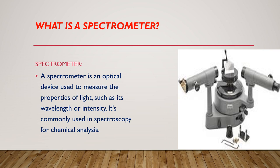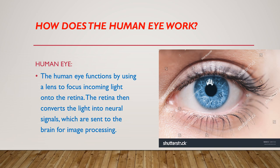What is a spectrometer? A spectrometer is an optical device used to measure properties of light, such as its wavelength or intensity. It is commonly used in spectroscopy for chemical analysis.